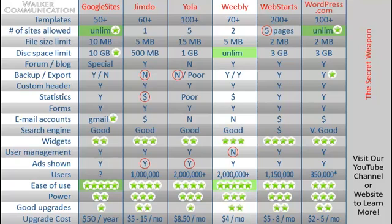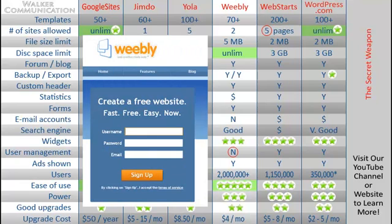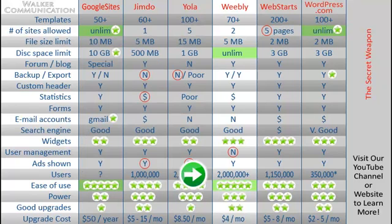This is a pretty good system. The green stars are good things and little red circles are not so good things. You'll notice that most things on Weebly are pretty good. They've got plenty of users — a very popular service, a couple of million people using Weebly. I classify them at very high ease of use. It's really simple to use, and they're one of the two best that I have on the list.